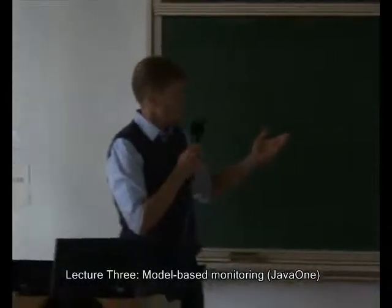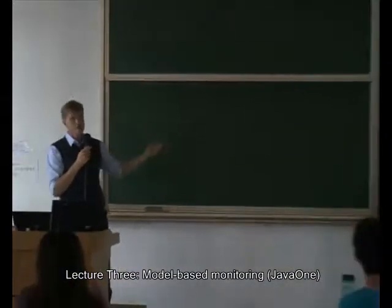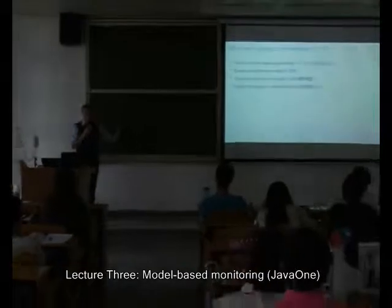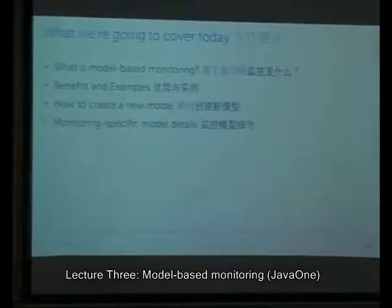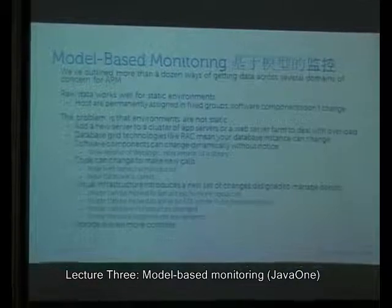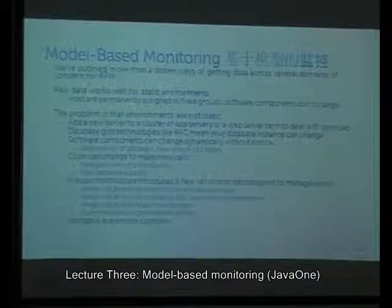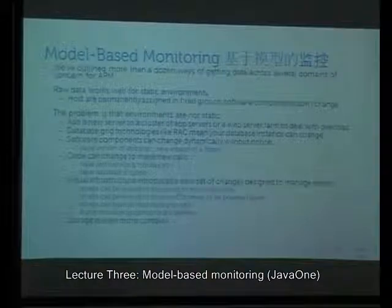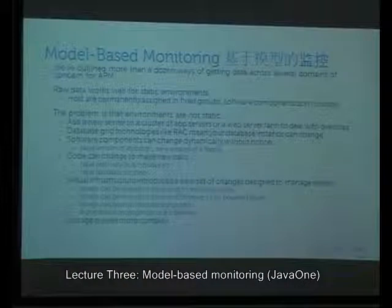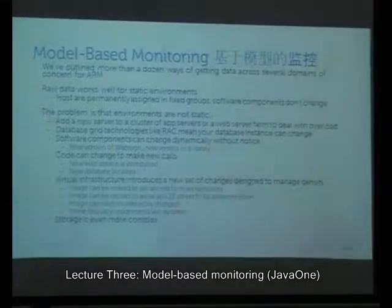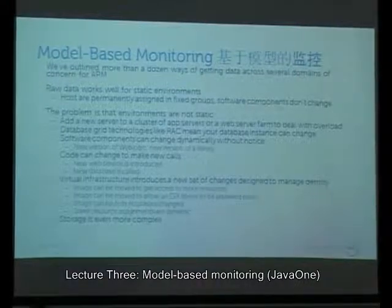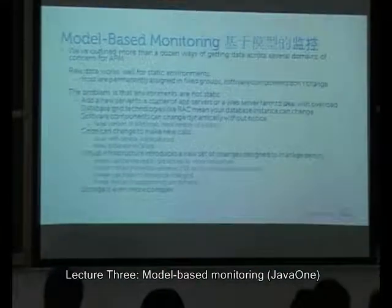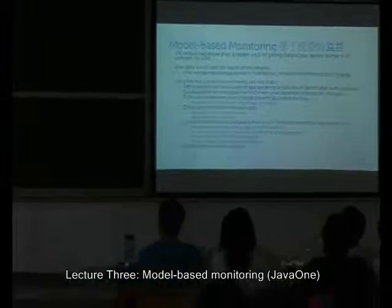We're going to talk about what model-based monitoring is, the benefits, examples of it, and in the context of Foglight, how to create a new model. There are many different kinds of data from all different domains, and in the APM application performance monitoring domain, we care about all that data. We want to structure that data in a meaningful way. Raw data is helpful in static environments — if you have one program running on a single machine, you can gather static data and completely understand it.